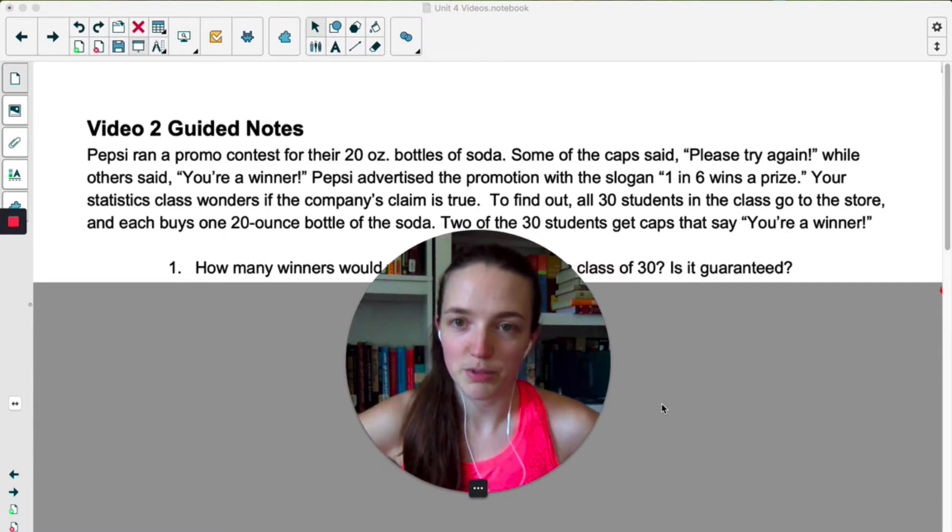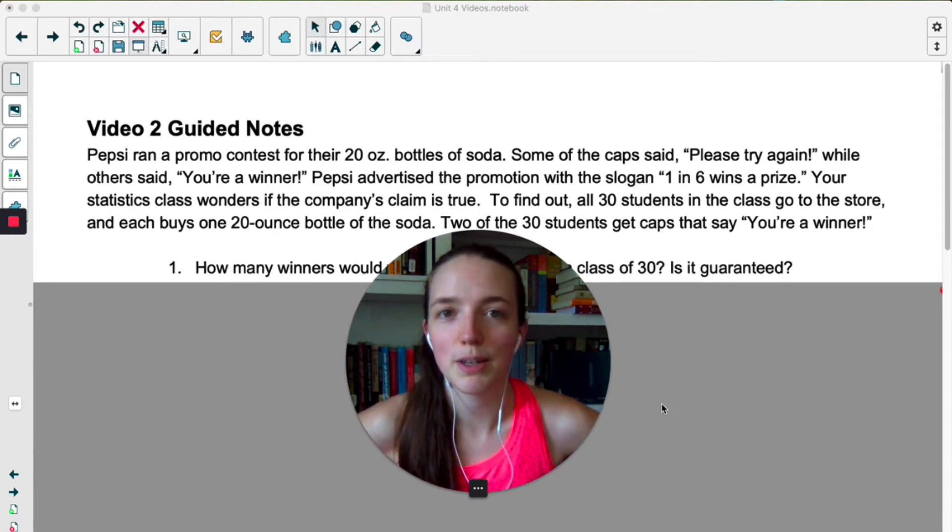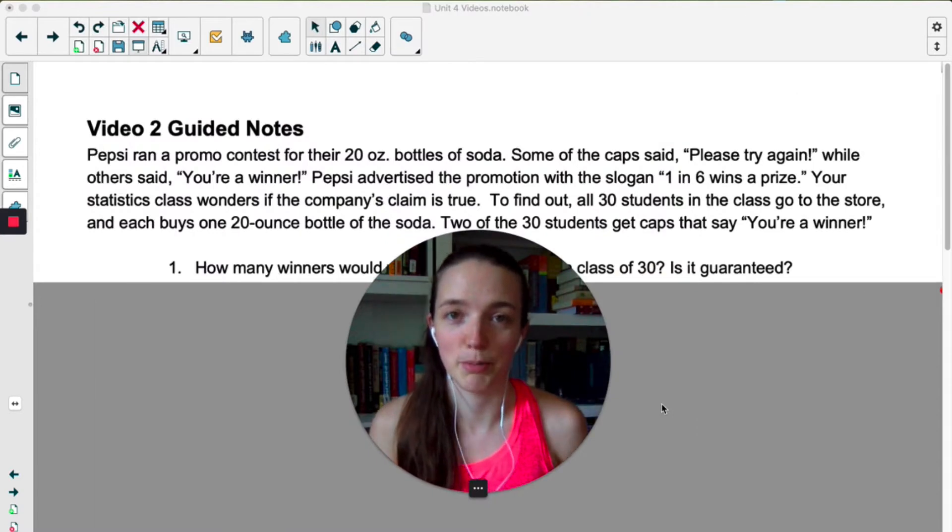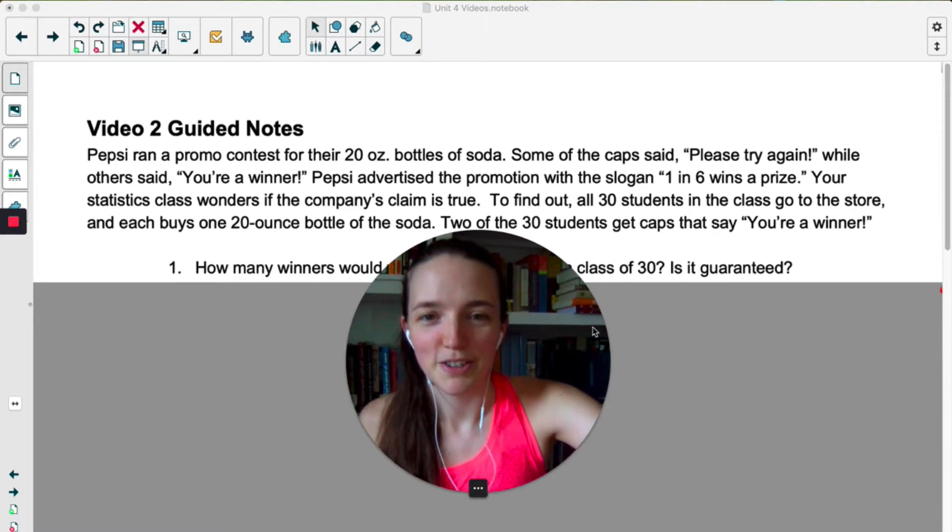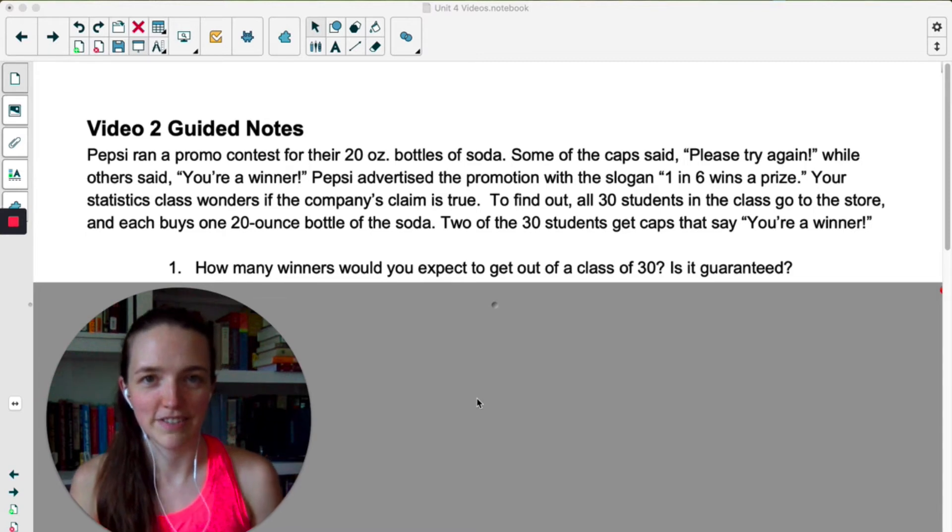Pepsi advertises with the slogan one in six wins a prize. Your statistics class wonders if the company's claim is true, so to find out all 30 students go to the store and each one buys a bottle of pop. Out of the 30 students, two of them get a cap that says you're a winner. So the question is, how many winners would you expect to get in a class of 30 and is that guaranteed?